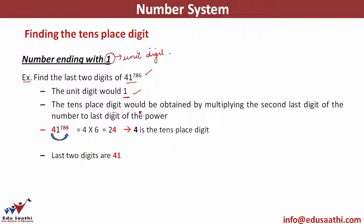The tens place digit is obtained by multiplying the second last digit with the last digit of the power. So I'll multiply the second last digit with the last digit of the power: 6 into 4 is 24. I'll keep 4, which will be my tens place digit. So the last two digits will be 41. The tens place digit is obtained by multiplying the second last digit with the last digit of the power, giving 24, and we keep the last digit, which is 4.